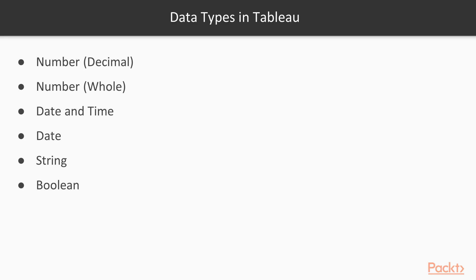Data types in Tableau: Number Decimal is the floating point or real number type. It is advisable to round floating point numbers when using them in calculations. Number Whole is the integer data type. Date and Time — Tableau allows for dates in varied formats. A string can also be treated as a date data type; in order to do this, prefix the string with a hash.